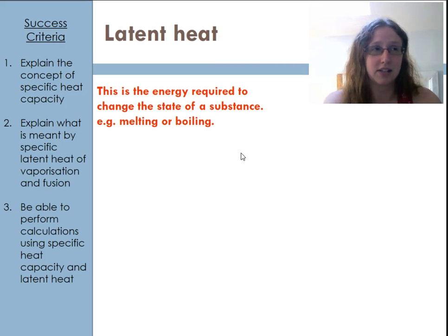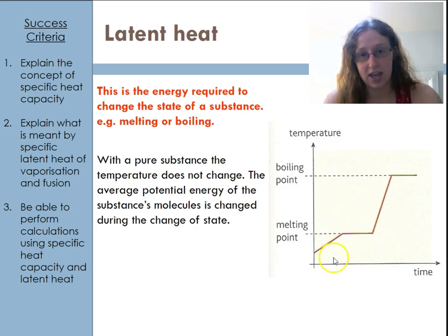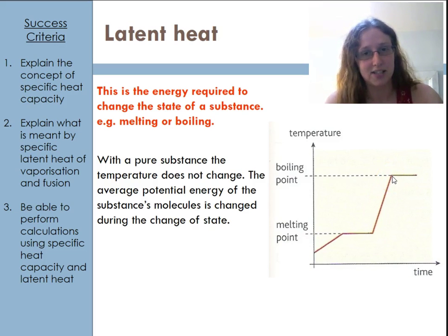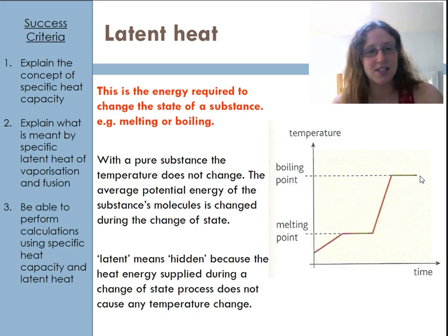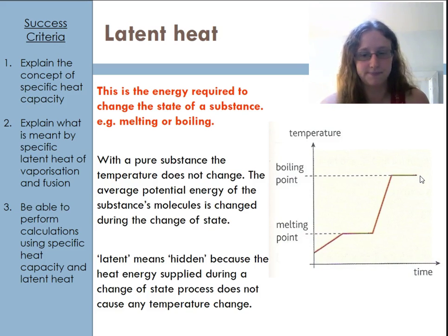Latent heat covers processes like melting, boiling, condensation, vaporisation, and sublimation. For a pure substance, the temperature doesn't change while changing state — only the average potential energy of the molecules changes. If you look at the graph, as energy is put in over time, the temperature rises until the melting point, then stays flat as the substance changes state. Once fully changed, the temperature rises again until the next state change, giving another flat region. We call this latent heat — 'latent' means hidden, because you can't see the energy input on a thermometer.